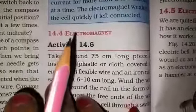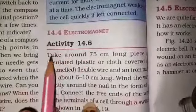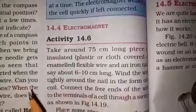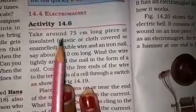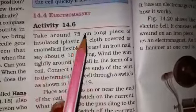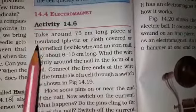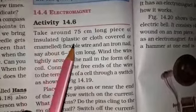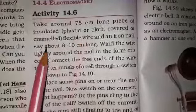Now we will continue with the fourth topic of this chapter, that is electromagnets. Activity 14.6: Take around 75 cm long piece of insulated flexible wire - that means plastic or cloth covered or enameled wire.